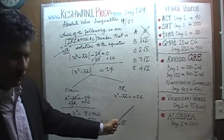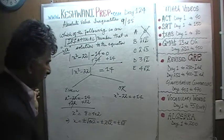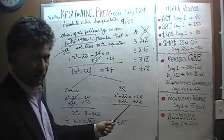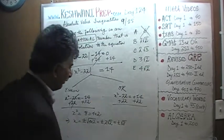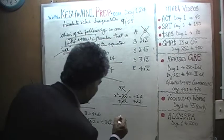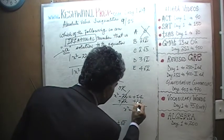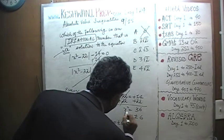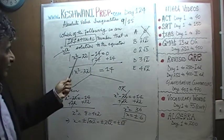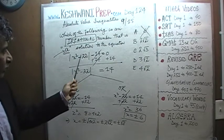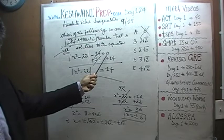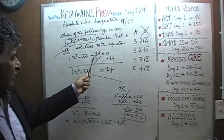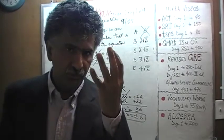Let's work out the second case anyway. Adding 22 to both sides: x squared equals 14 plus 22, which is 36. So x is either positive 6 or negative 6. This equation therefore has 4 solutions total. The given equation — absolute value of x squared minus 22, minus 14, equals 0 — has 4 solutions.